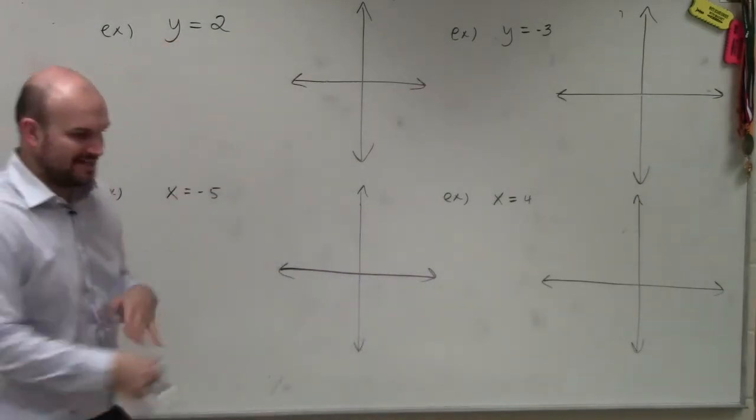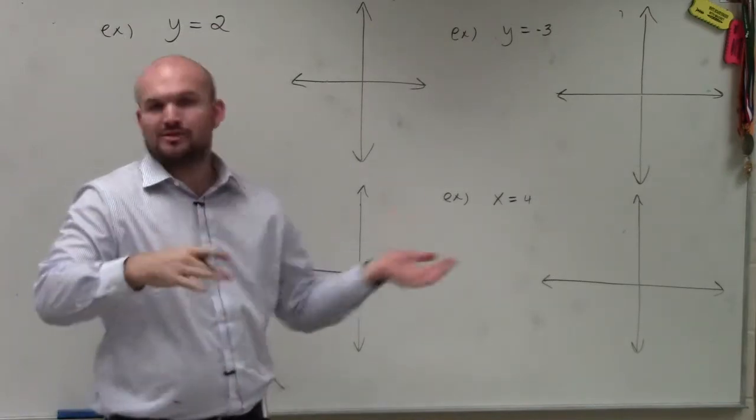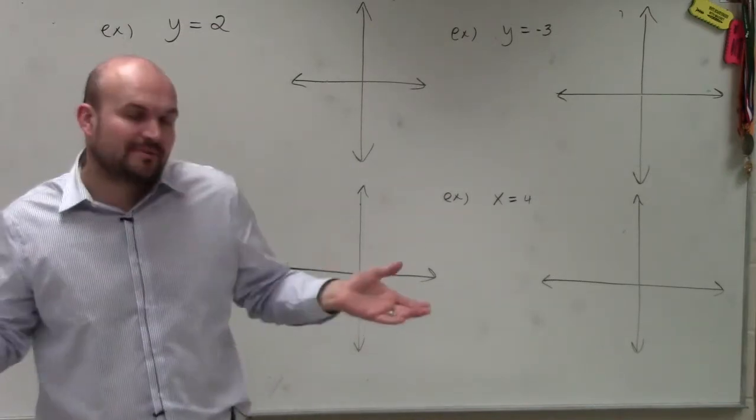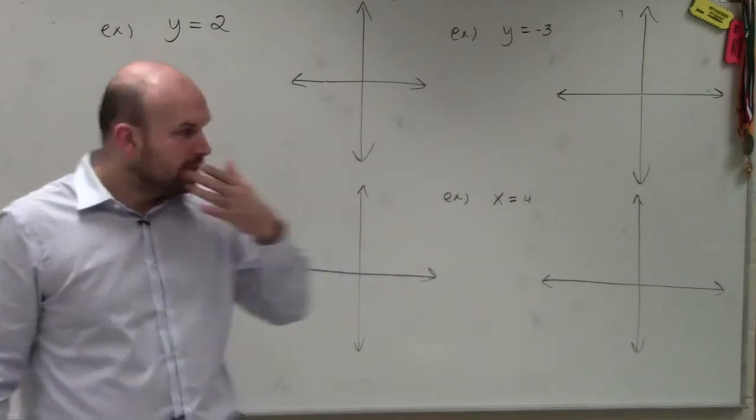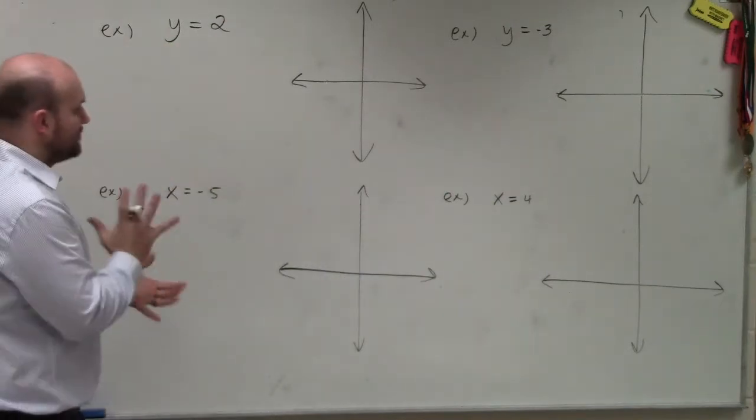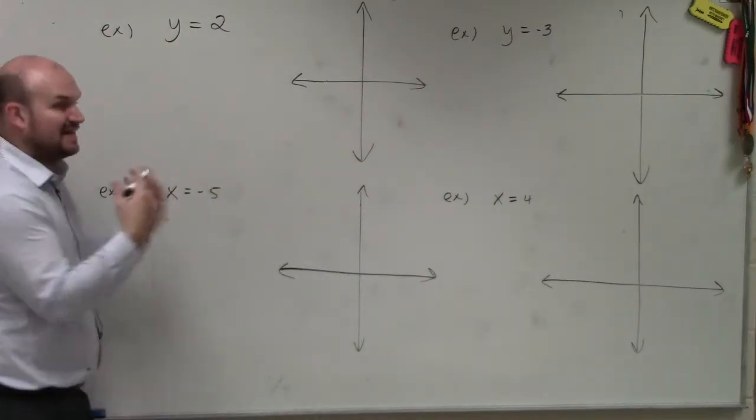So basically, when we're graphing horizontal and vertical lines, a lot of times when we're graphing lines we use the slope-intercept form, or we could use the intercept form with standard form. Well, when you're first learning to graph lines, one of the key things that we do is create a table of values.